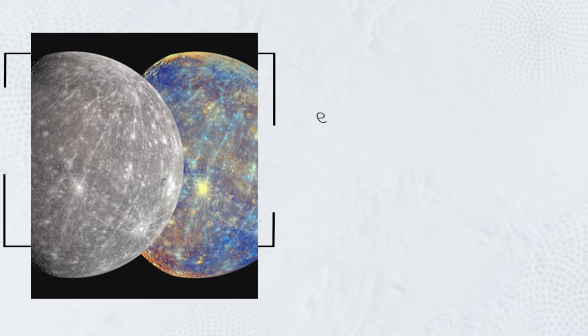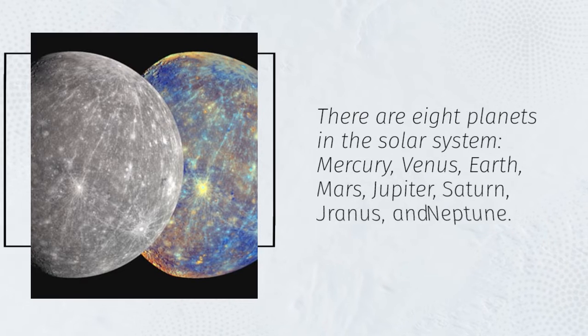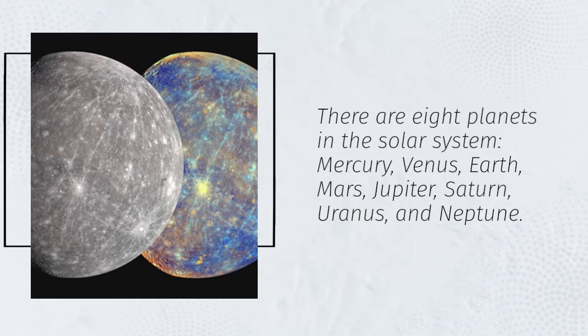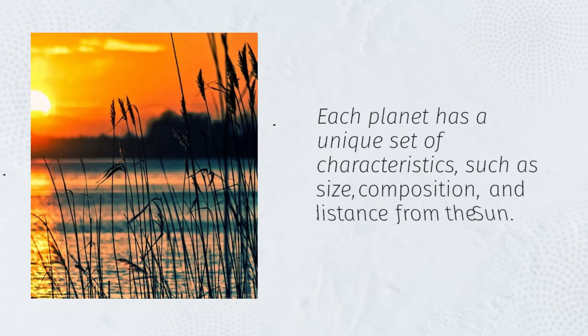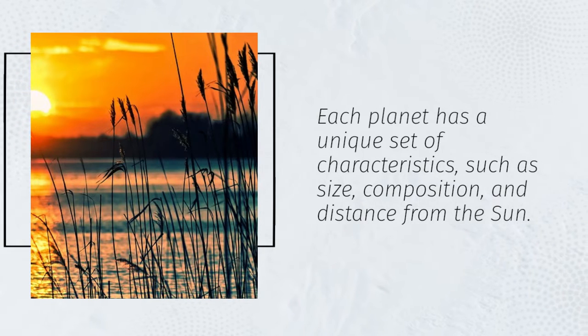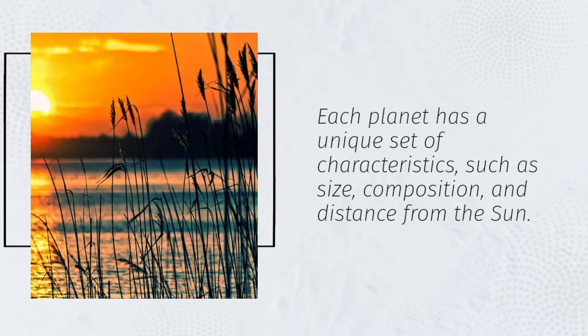There are eight planets in the solar system: Mercury, Venus, Earth, Mars, Jupiter, Saturn, Uranus, and Neptune. Each planet has a unique set of characteristics, such as size, composition, and distance from the sun.